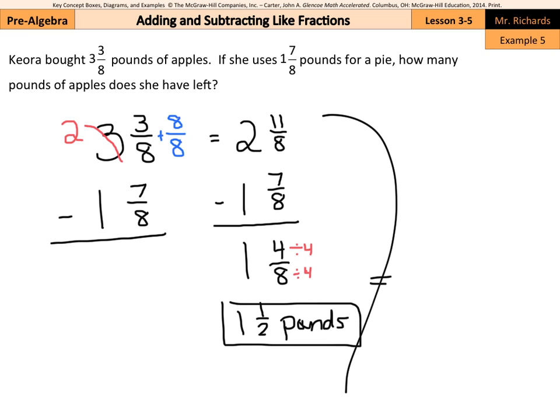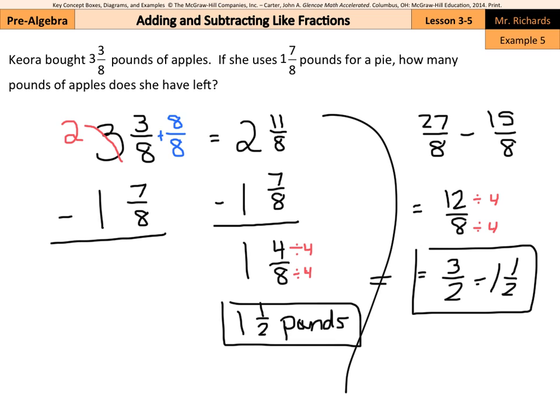3 times 8 is 24, plus 3 is 27 eighths, minus 1 times 8 is 8, plus 7 is 15 eighths. So 27 minus 15 is equal to 12 eighths. If I divide out a 4 on top and bottom, this becomes 3 halves, which is equal to our 1 and 1 half we found using the mixed number method.